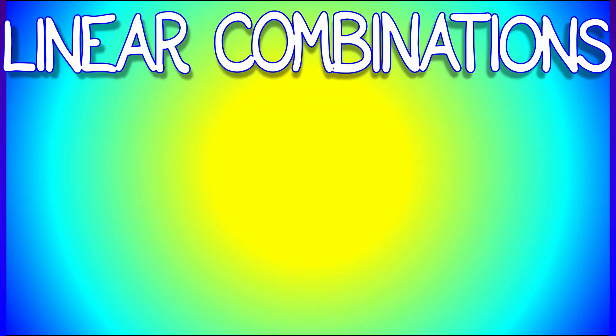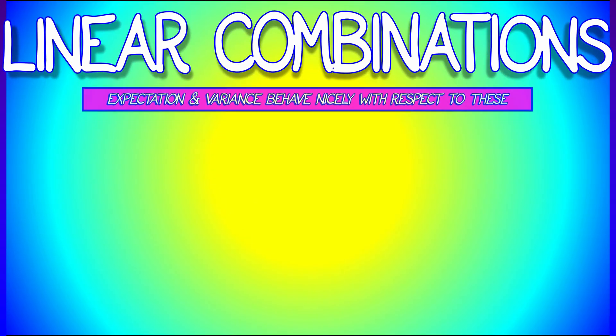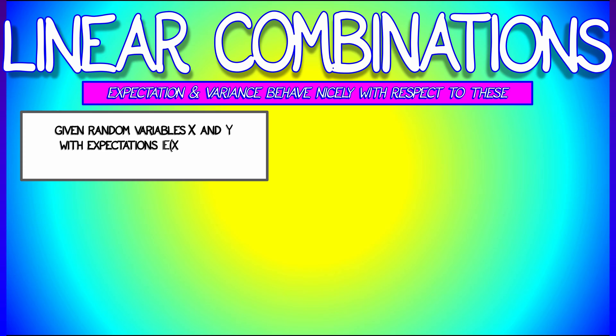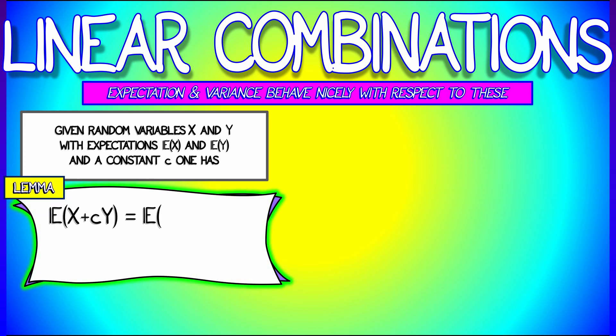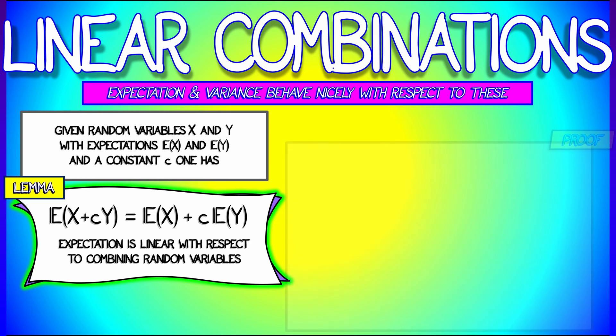This is worth spending a little bit of time on. Let's say that we have two random variables, X and Y, with expectations E(X) and E(Y). Then, given some constant c, if I take the linear combination X plus cY, then this new random variable has expectation equal to the expectation of X plus c times the expectation of Y. That is, expectation is linear with respect to combining random variables.